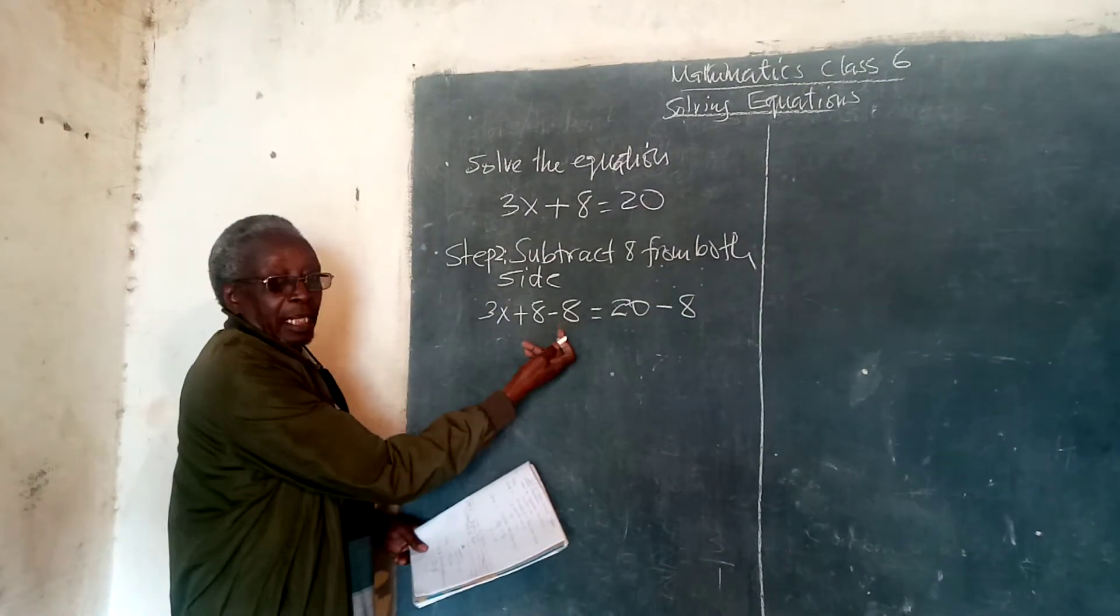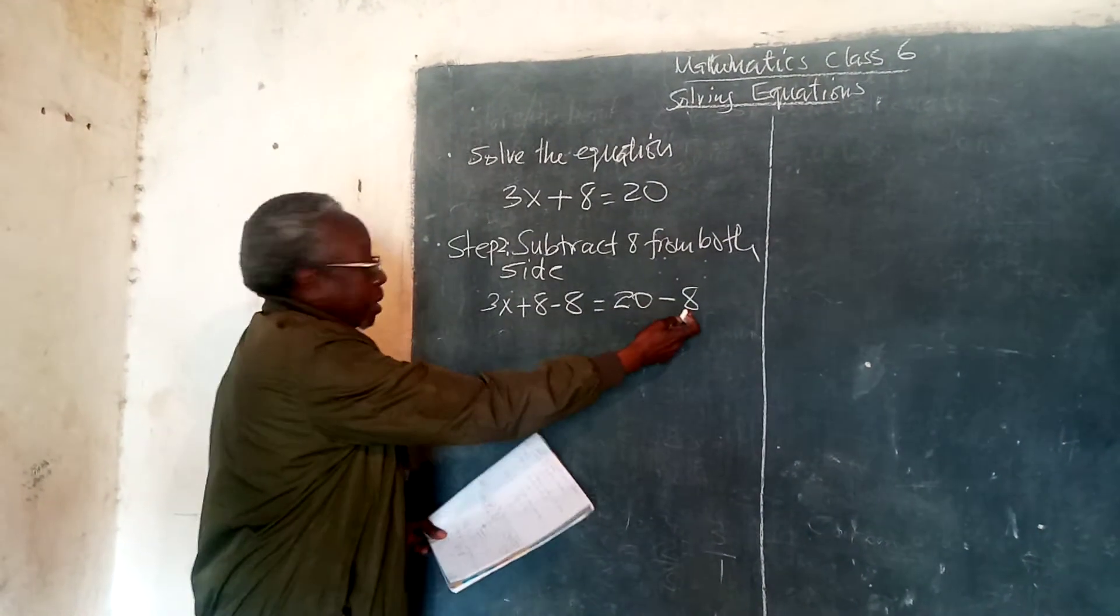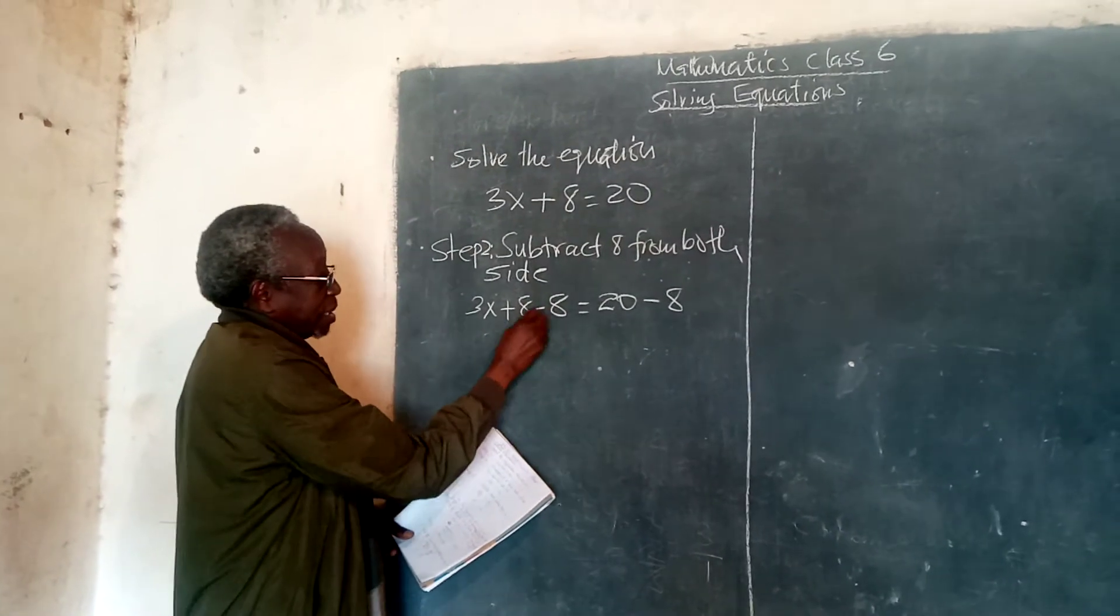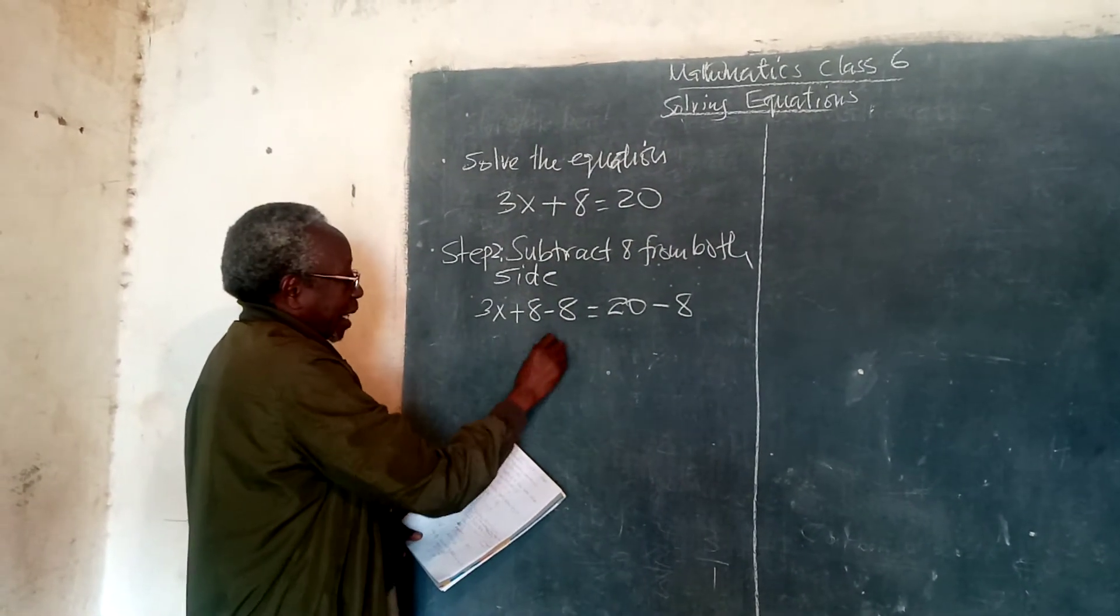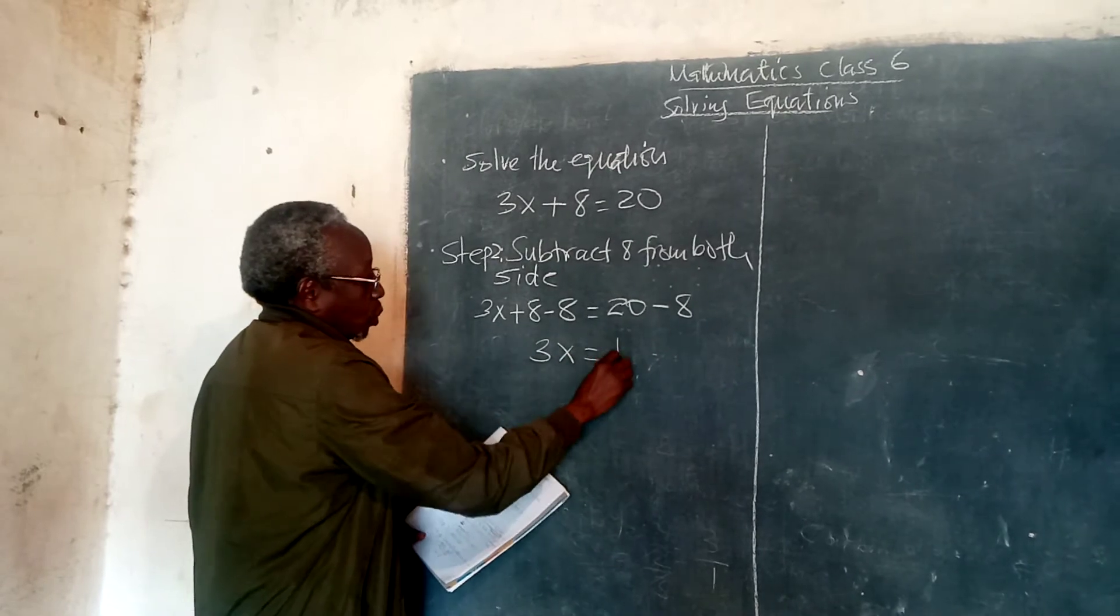Now, we have subtracted 8 from both sides. And therefore, here we have 8 take away 8 is 0, so we have 3x here is equal to 12.